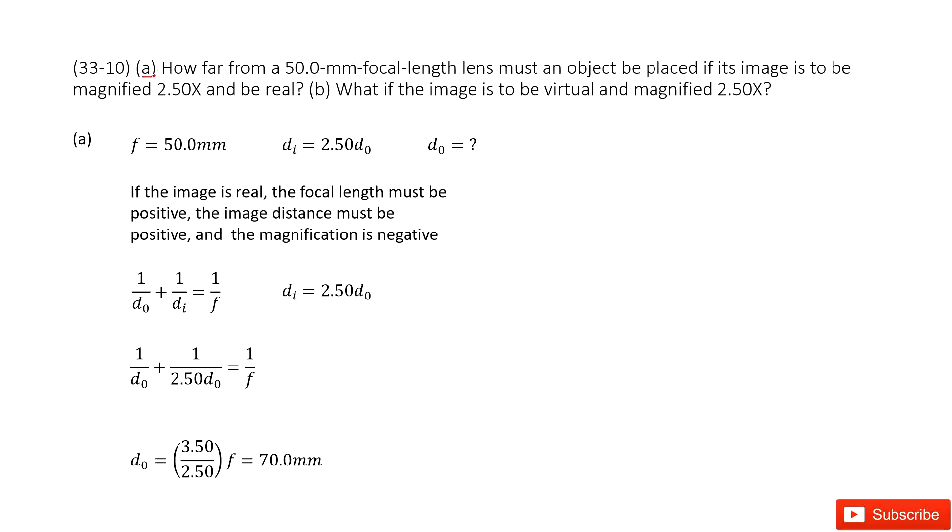For part A, we can see the focal length is given. The image distance over the object is 2.5, so the image becomes larger, and also the image is real. We need to find the object distance.